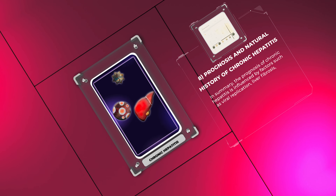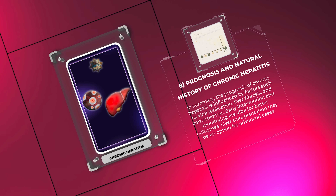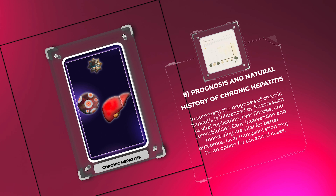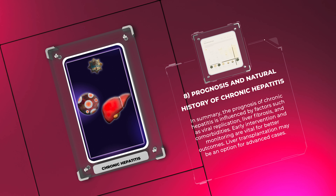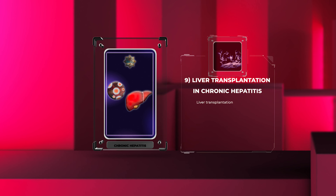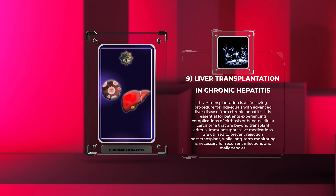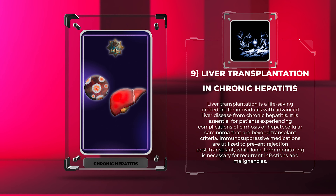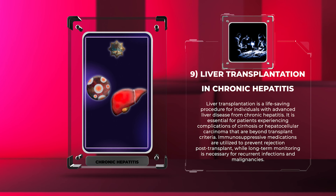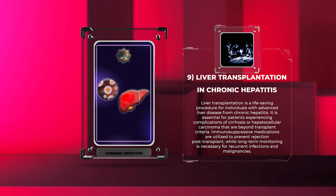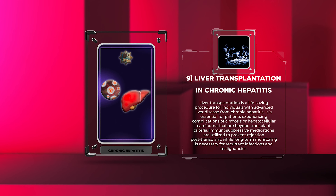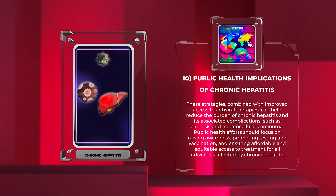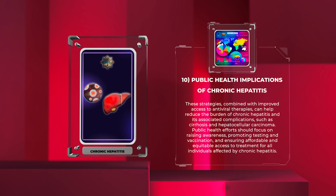The prognosis of chronic hepatitis is influenced by factors such as viral replication, liver fibrosis, and comorbidities. Early intervention and monitoring are vital for better outcomes. Liver transplantation is a life-saving procedure for individuals with advanced liver disease, particularly those experiencing complications of cirrhosis or hepatocellular carcinoma. Immunosuppressive medications are utilized to prevent rejection post-transplant, while long-term monitoring is necessary for recurrent infections and malignancies. These strategies, combined with improved access to antiviral therapies, can help reduce the burden of chronic hepatitis and its associated complications.